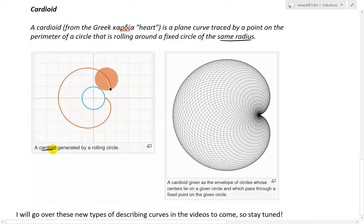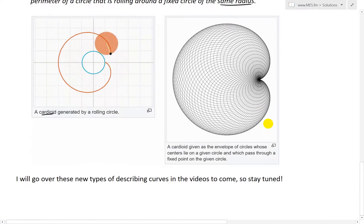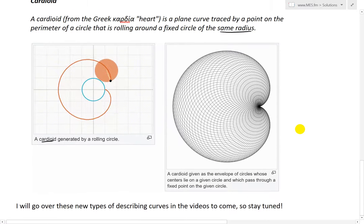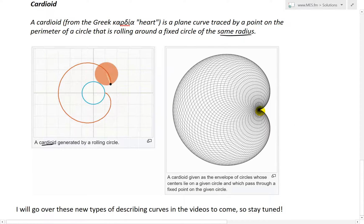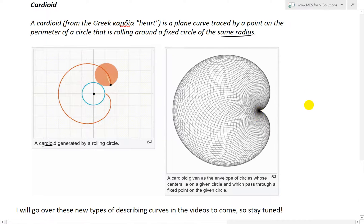So here's a cardioid generated by a rolling circle, and a cardioid given as the envelope of circles whose centers lie in a given circle and which pass through a fixed point on the green circle. These are just basically different radius circles around it but with the same exact center point. And it looks something really cool like this.